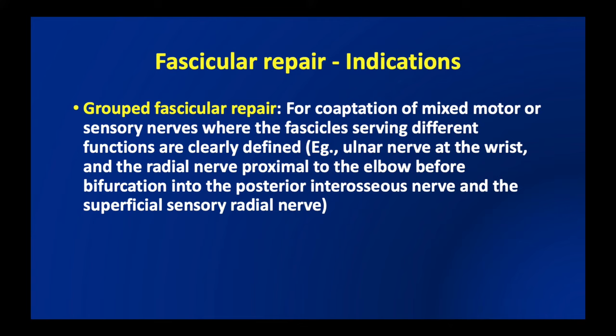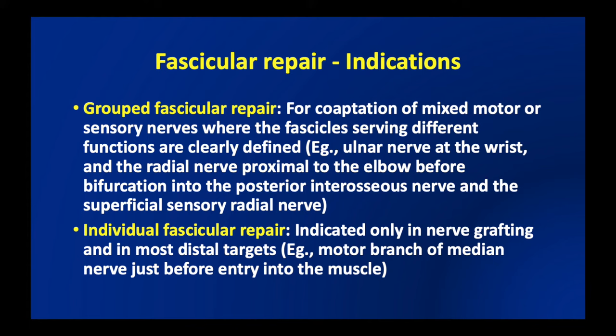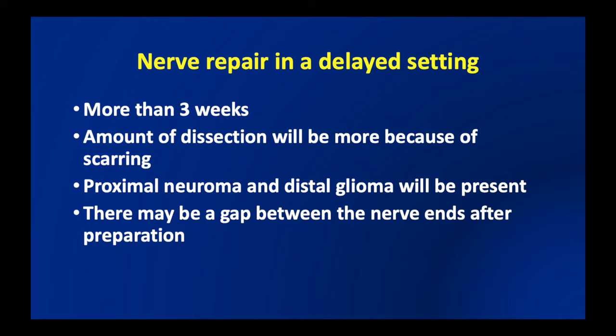However, there are some indications for fascicular repair. Grouped fascicular repair is advised for coaptation of mixed motor or sensory nerves when the fascicles serving different functions are clearly defined — for example, the ulnar nerve at the wrist and the radial nerve proximal to the elbow before the bifurcation into the posterior interosseous nerve and the superficial sensory radial nerve. Individual fascicular repair is indicated only in nerve grafting and for the most distal targets, such as the motor branch of the median nerve just before entry into the muscle.